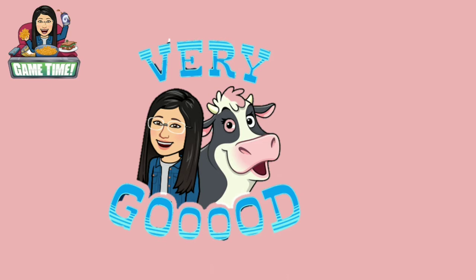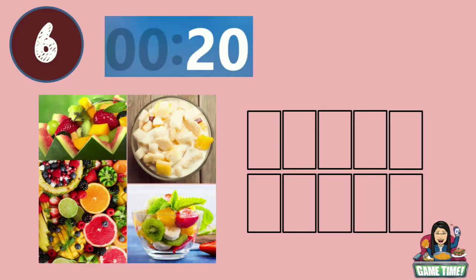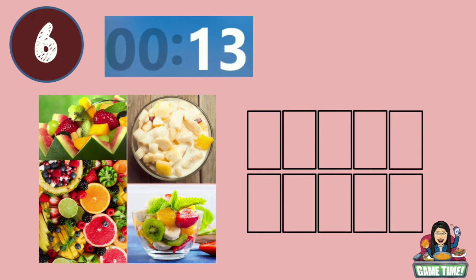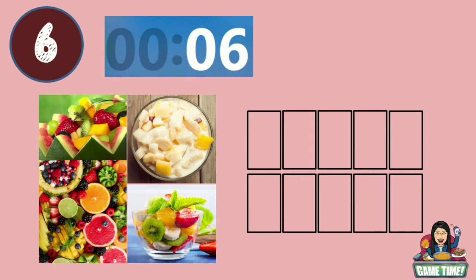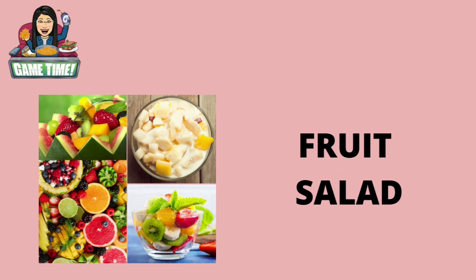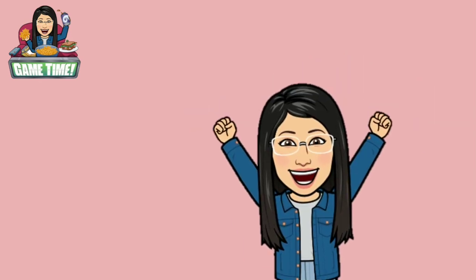Now we're on the sixth picture. You have 20 seconds to guess what it is. Timer starts now. 9, 8, 7, 6, 5, 4, 3, 2, 1. Time's up. That's right. This is a fruit salad. Great job.